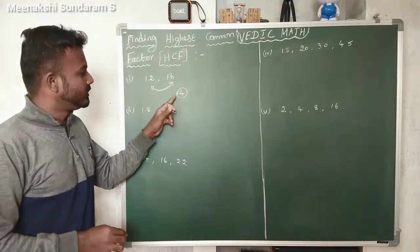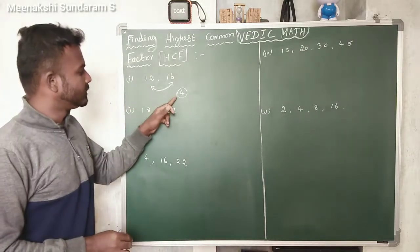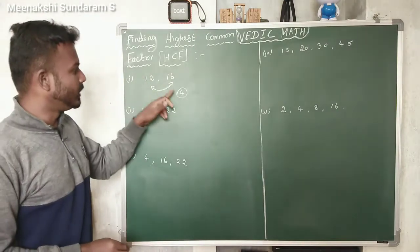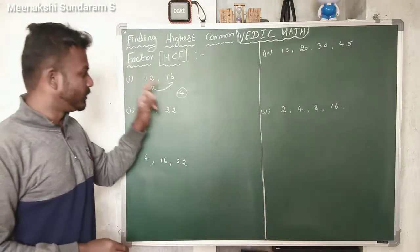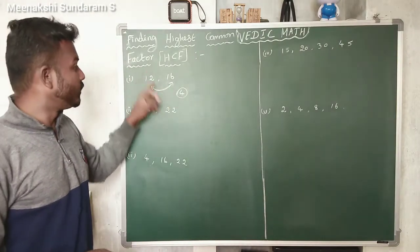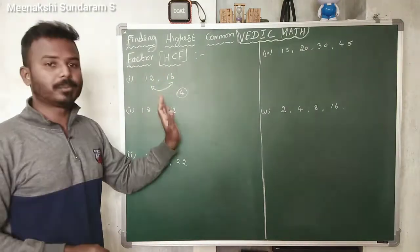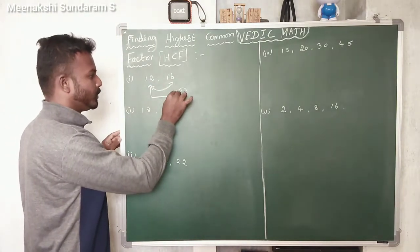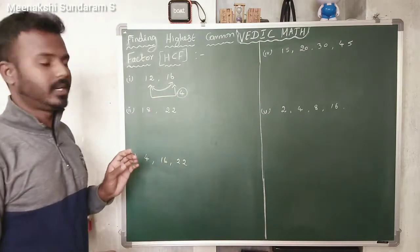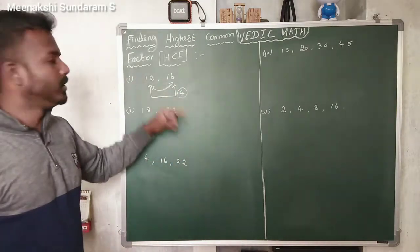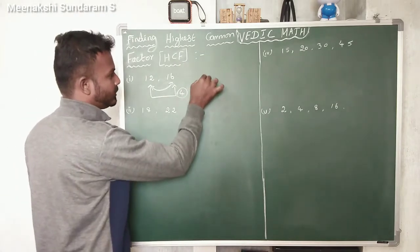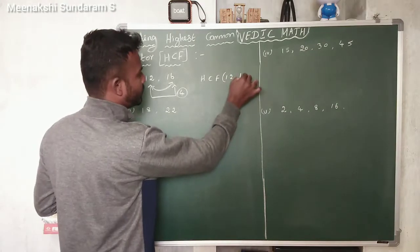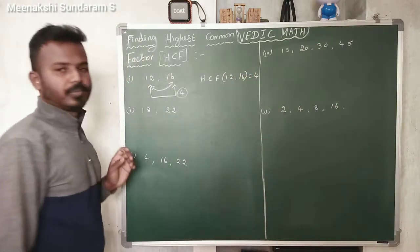Now you can check whether 4 divides 12 and also divides 16 or not. If the difference of the numbers divides all the given numbers, then surely the difference is the HCF. Obviously, 4 divides 12 and 4 divides 16. Therefore, the HCF of 12 and 16 equals 4.